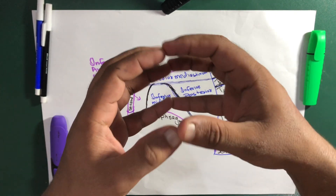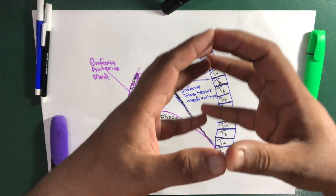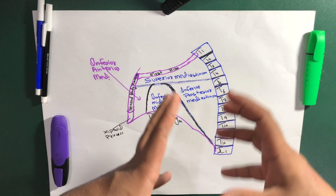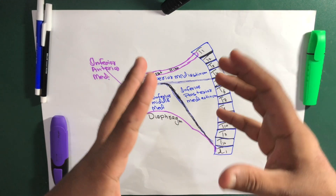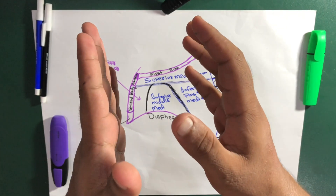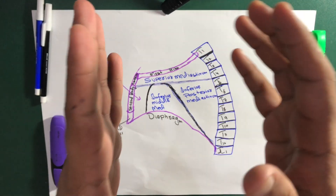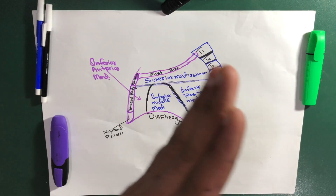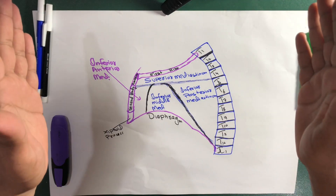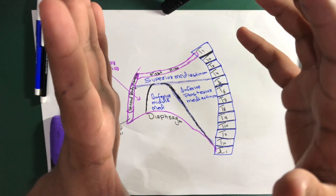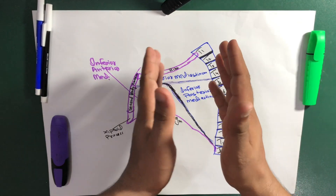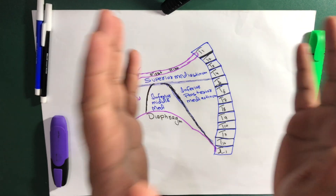Within those boundaries there are specific parts which we will discuss later. The definition of mediastinum is: it is that area between the lungs and pleural cavities that stands in the middle of the thoracic cavity. So the mediastinum sits in the middle of the thoracic cavity, between the two lungs and pleural cavities.